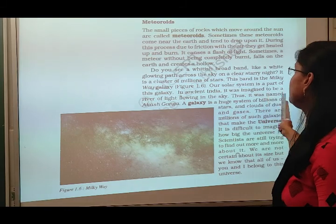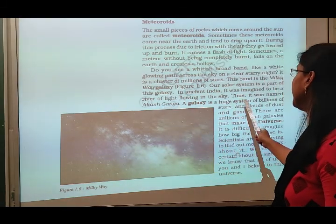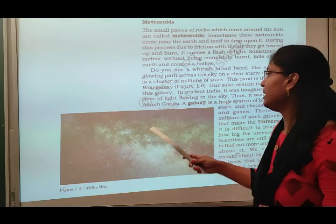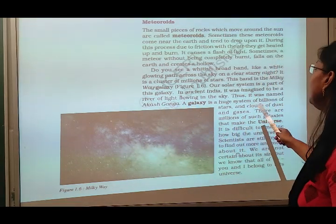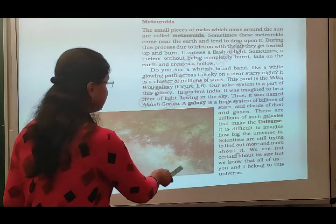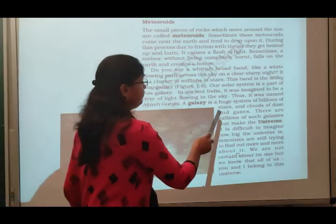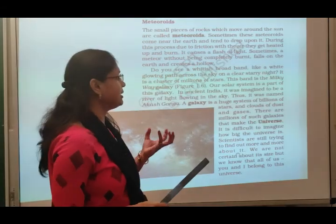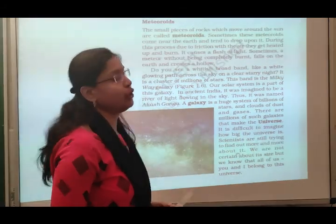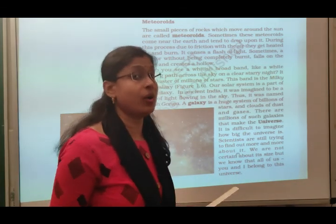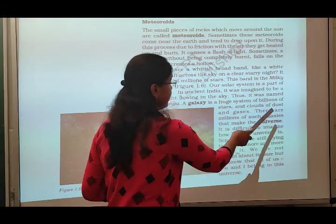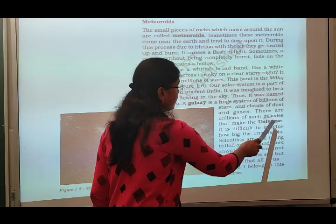In ancient India, it was imagined as a river of light flowing in the sky, and thus it was named Akash Ganga. A galaxy is a huge system of billions of stars, and the Milky Way Galaxy is a mixture of dust and gases. There are millions of such galaxies that make up the universe — the universe is a mixture of millions of galaxies.